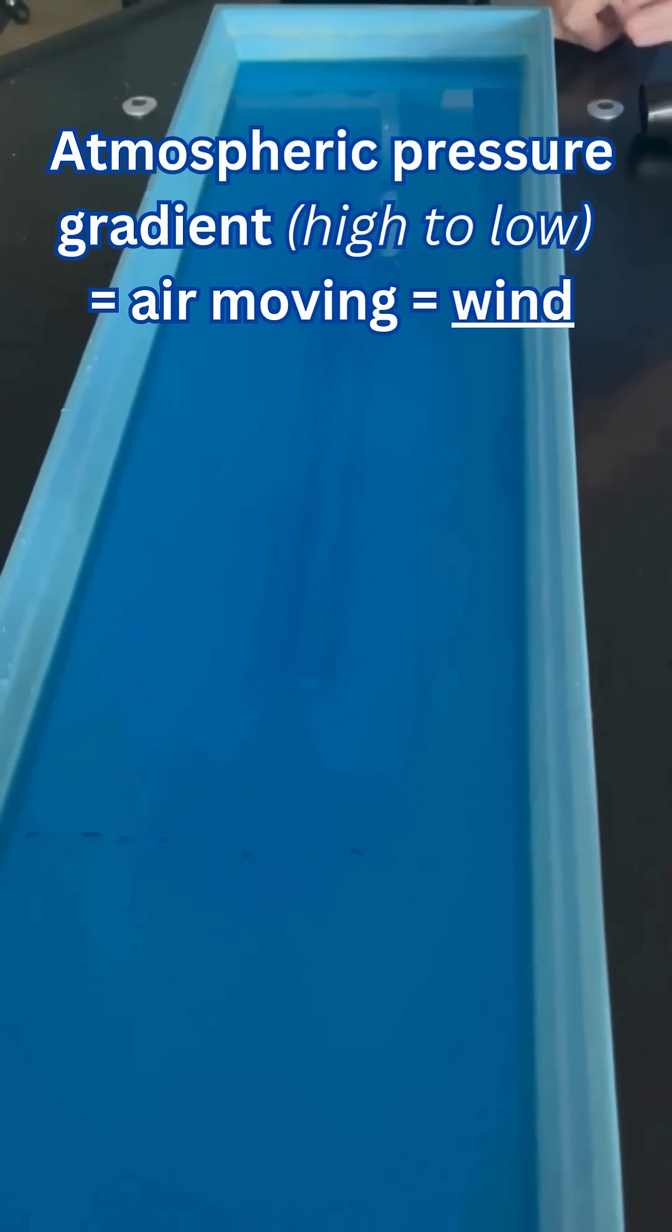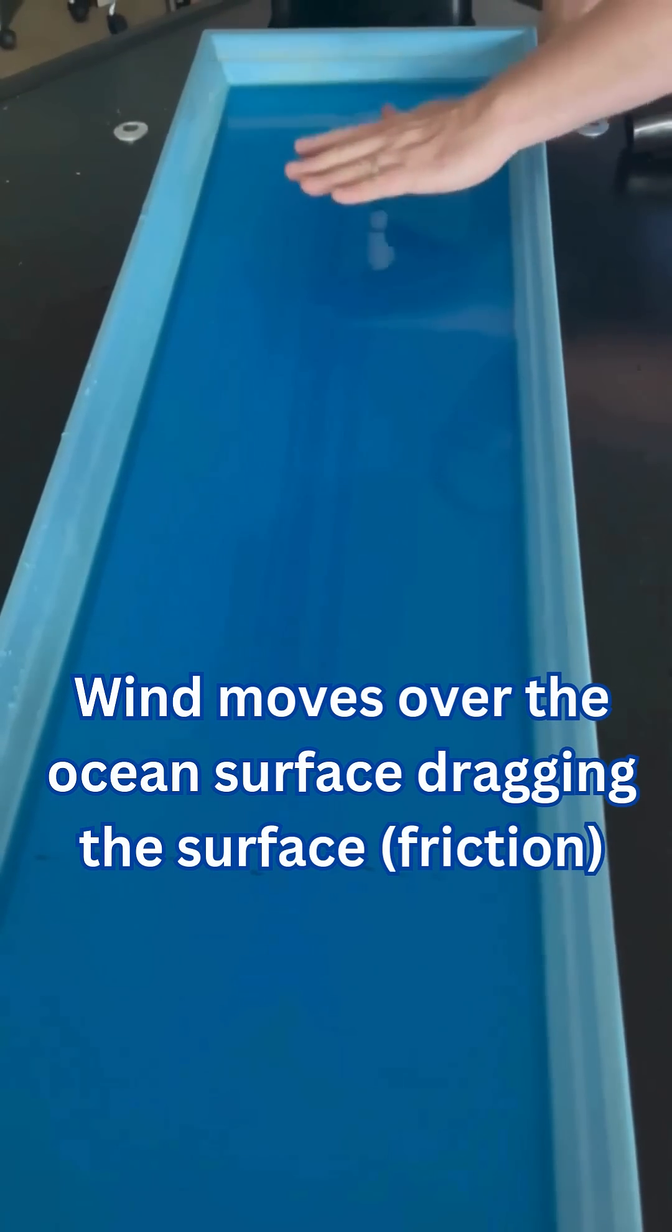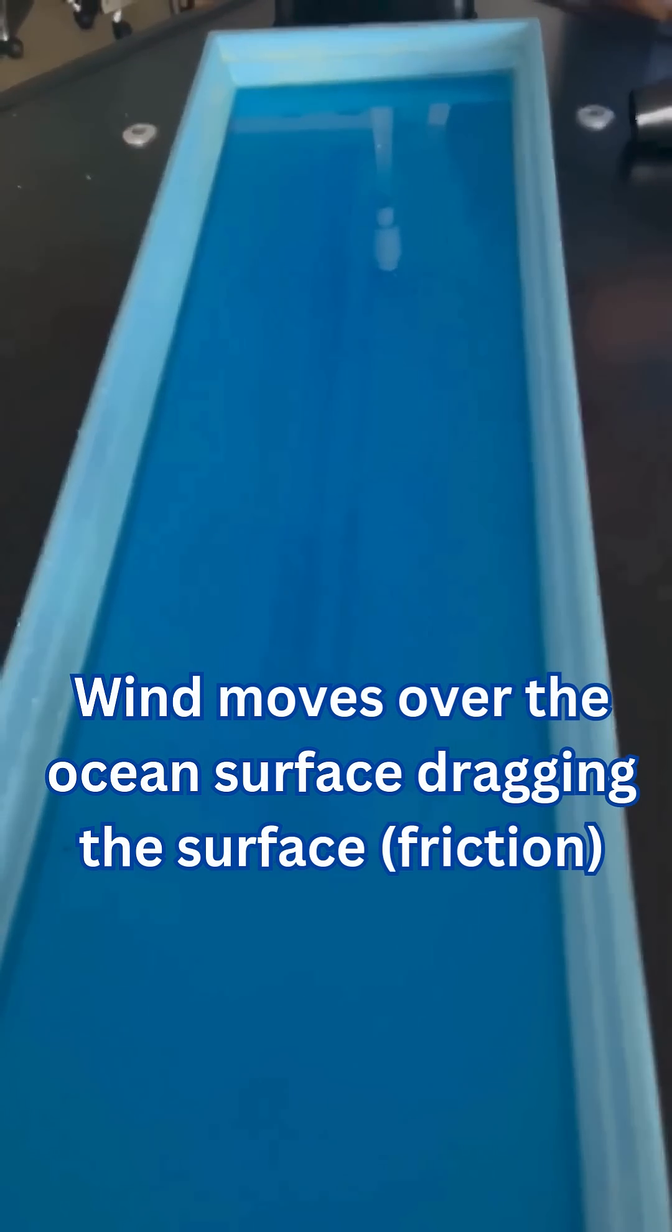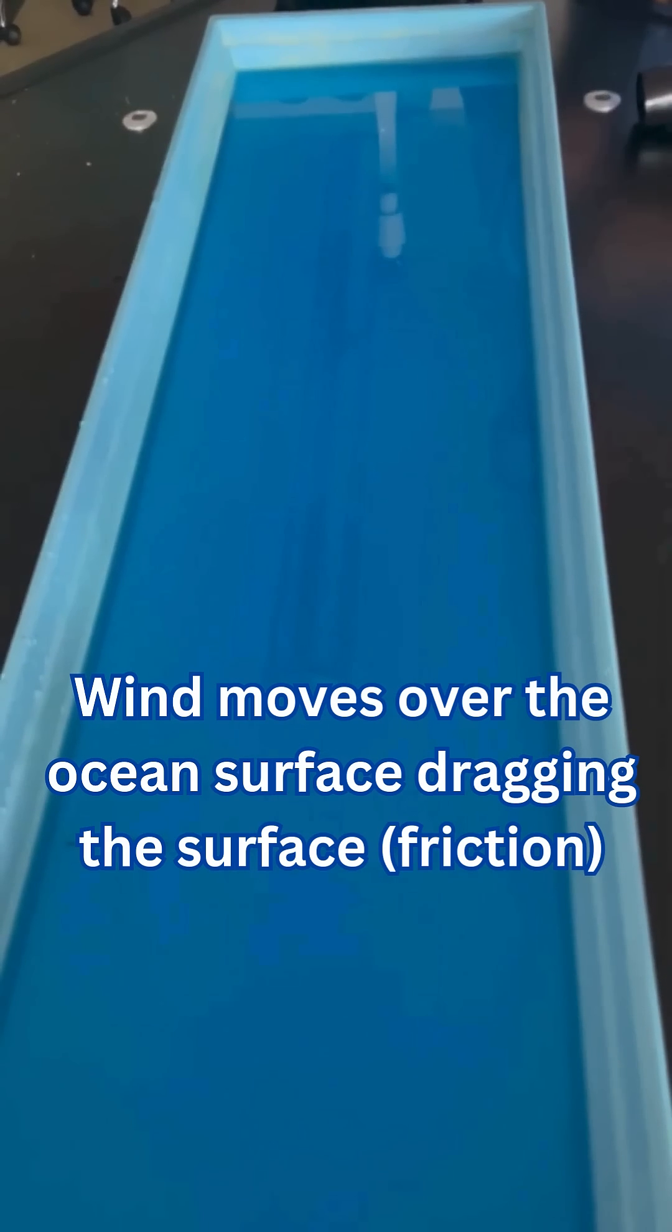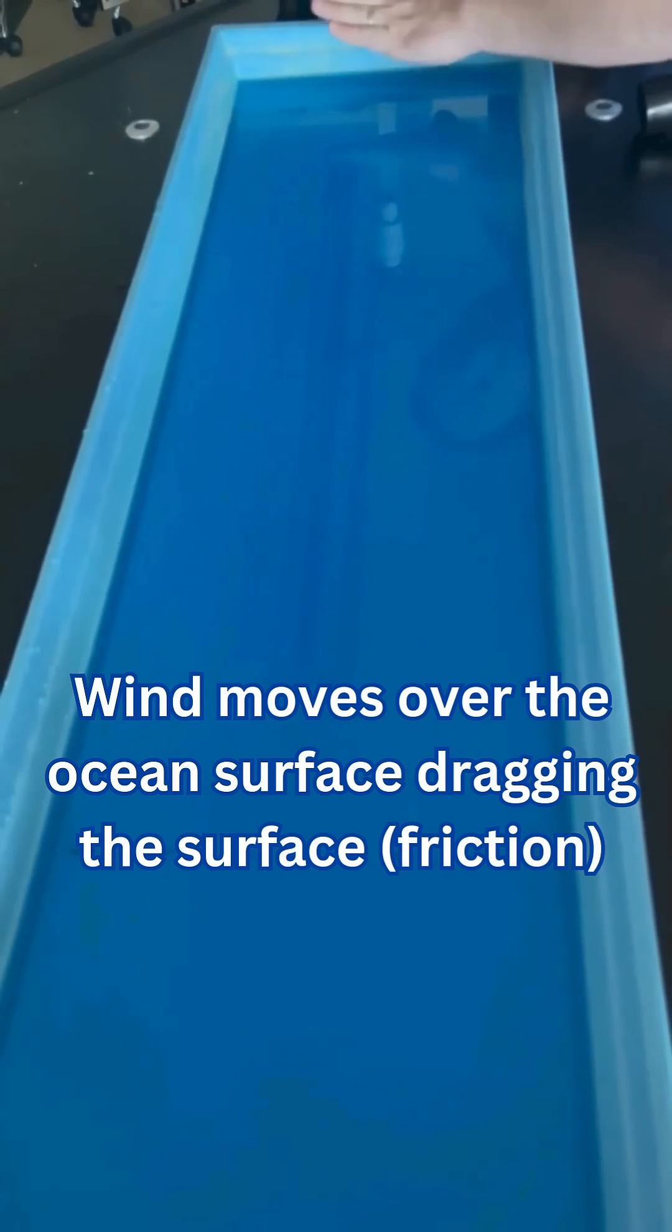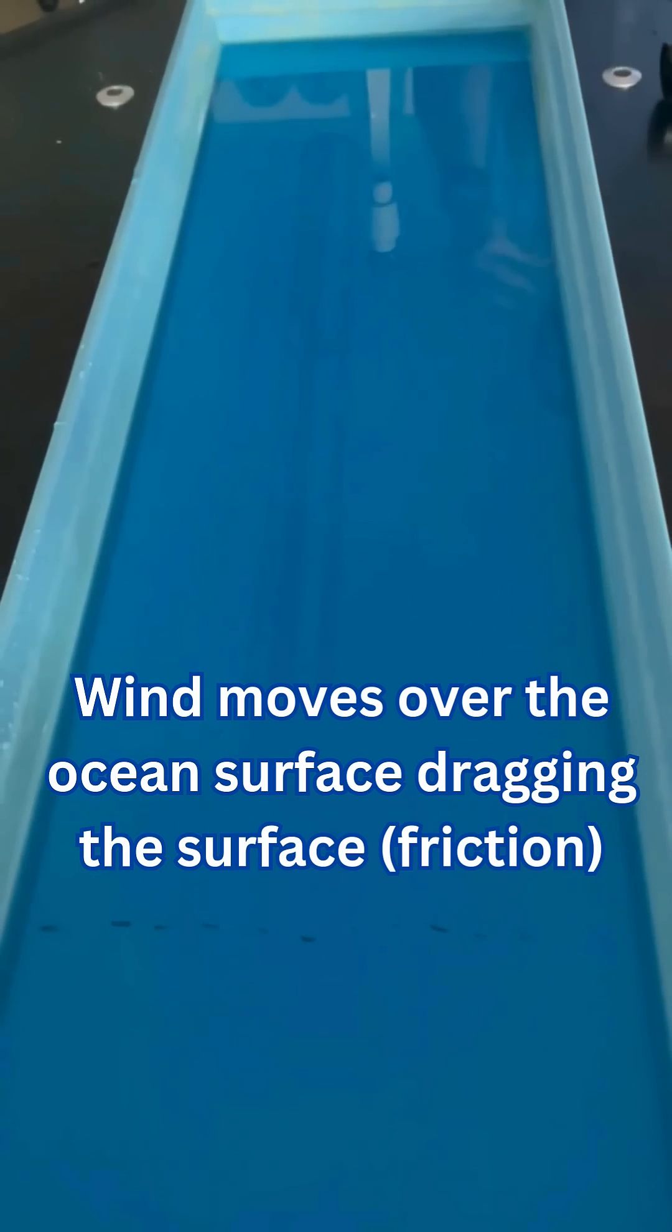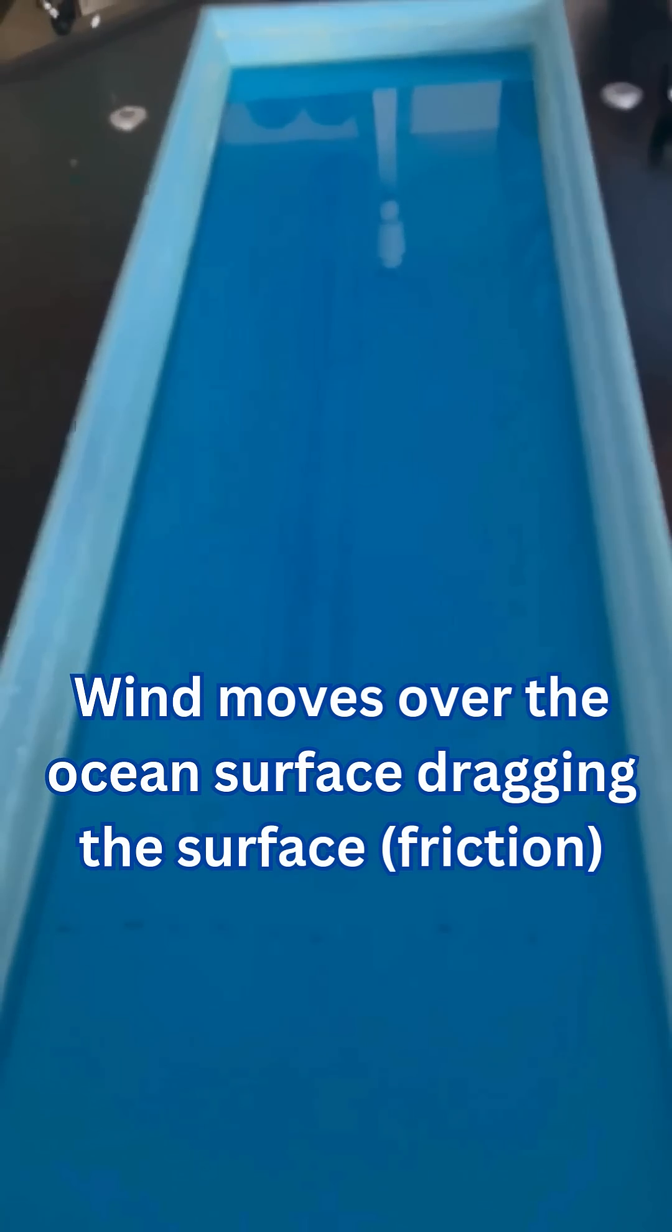The wind will literally drag the top part of the surface of the water with it. It depends on the strength of the wind and the direction and the consistency of the wind, and it's going to drag the surface and create ripples and then waves called surface waves or wind driven waves.